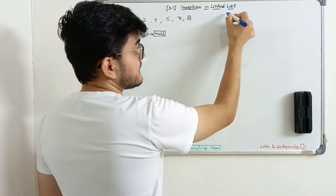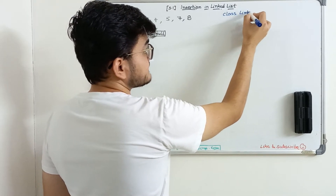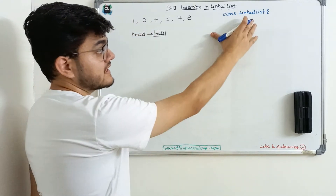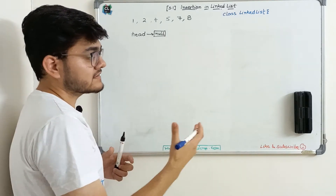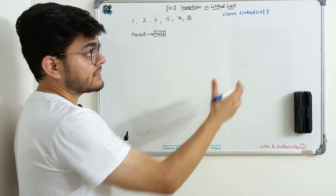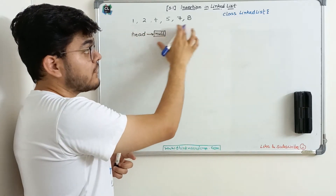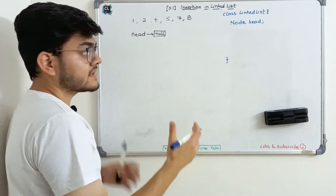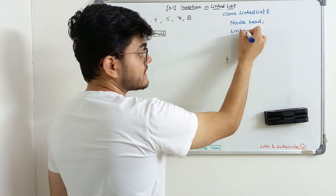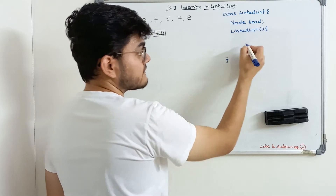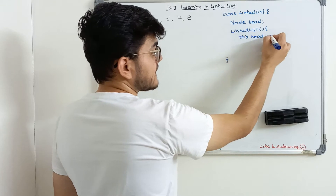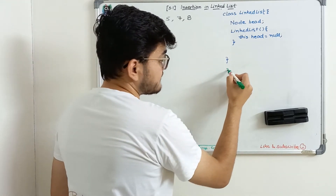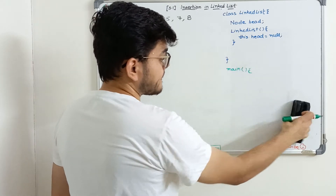I'm going to use the blue marker to define the class LinkedList. In the main program, I can create an object of this LinkedList class and then add some nodes into that object. At the end, we will obtain an object of this LinkedList class which will have all of these nodes. Initially, we know that head is null, so I'll write 'Node head' and leave the task of assigning head to null to the constructor of this class. The constructor will simply assign head as null.